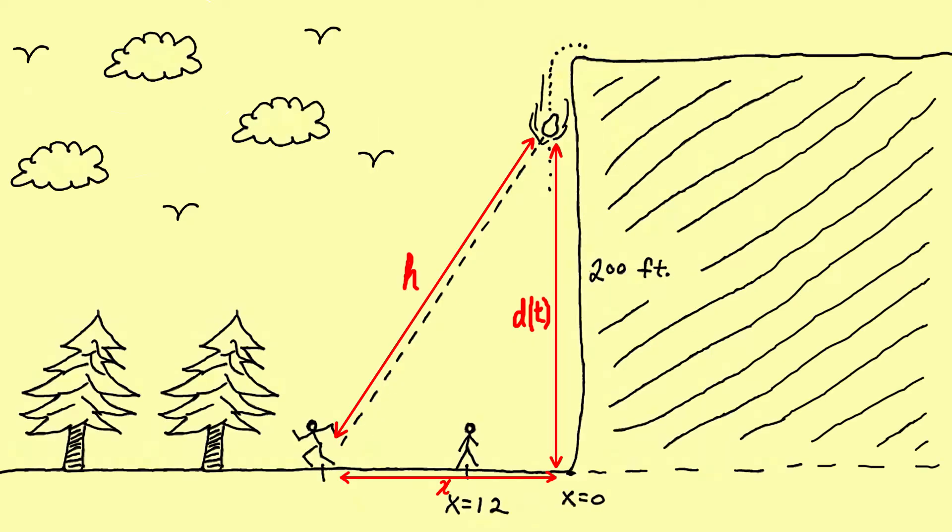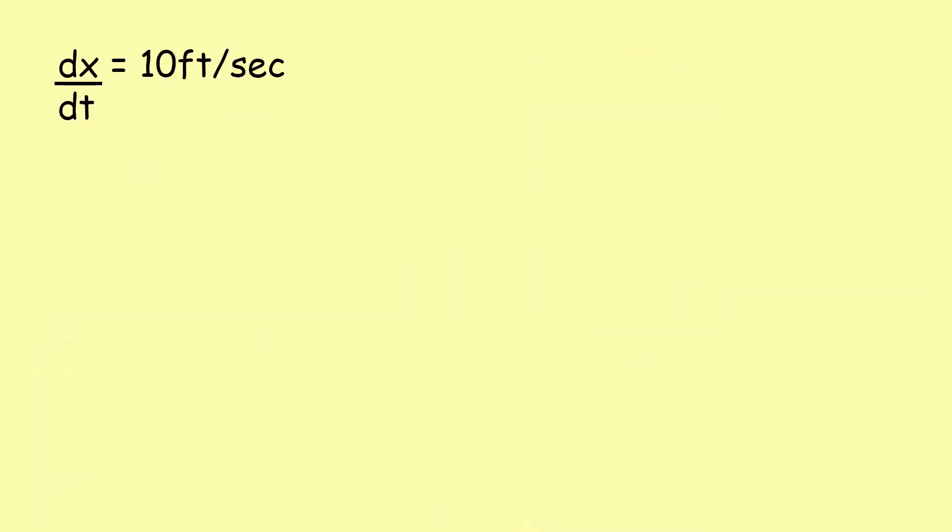Let d(t) be the height between the boulder and the ground after t seconds in motion. Also let h be the distance between the running you and the boulder in mid-air. We are told that the derivative of x with respect to t equals 10 feet per second.